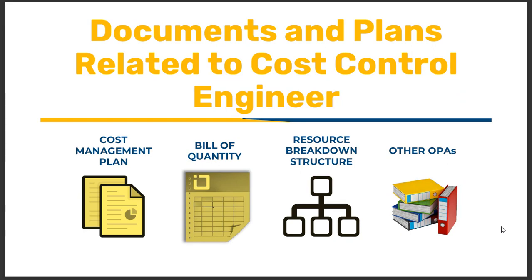The necessary documents that the cost-control engineer will need throughout the project include the cost management plan, which explains in detail how costs will be estimated, monitored, controlled, and reported to stakeholders. Next is the bill of quantity (BOQ), which in most cases is prepared by the cost-control engineer. This document lists the quantities and costs for each resource, and the total project cost is obtained using it.